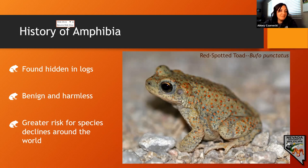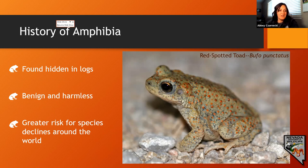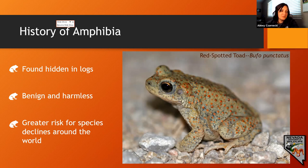As amphibians mature, they usually lose their gills and develop lungs as mentioned earlier. They are usually benign and harmless — even helpful — as creatures that devour harmful insects and serve as an alternate food source.